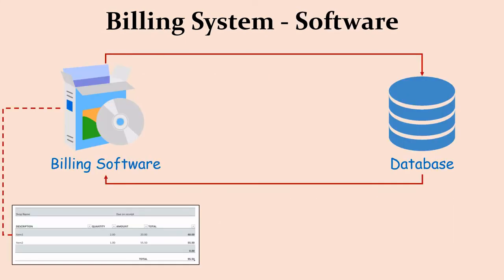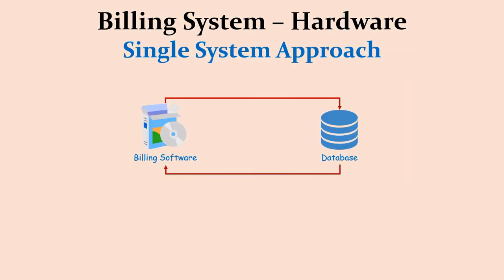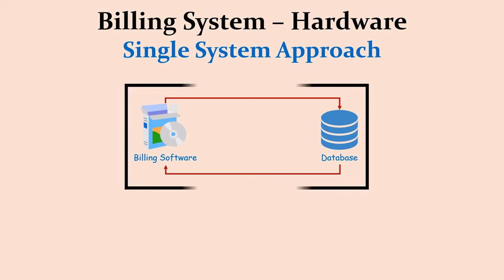Now, where is this database and billing application located? This is where the design of a billing application comes into picture. In a small shop, a single system approach is used — both the application and the database are installed on a single computer. This is more than enough for a small shop. An operator can use this computer to enter stock information, help customers make purchases, generate regular or discounted bills, and retrieve monthly sales information.